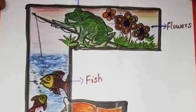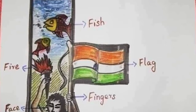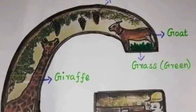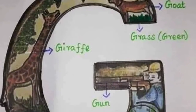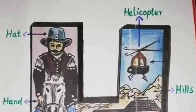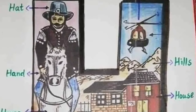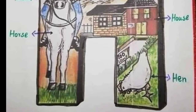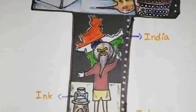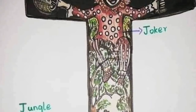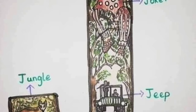F for flag, G for green, H for head, I for India, J for jungle.